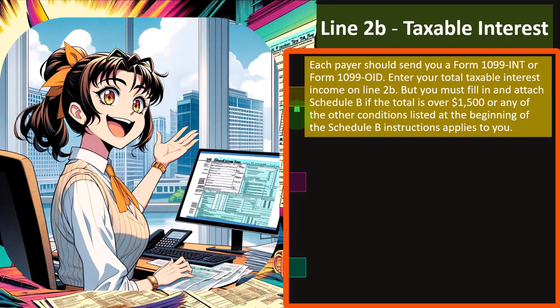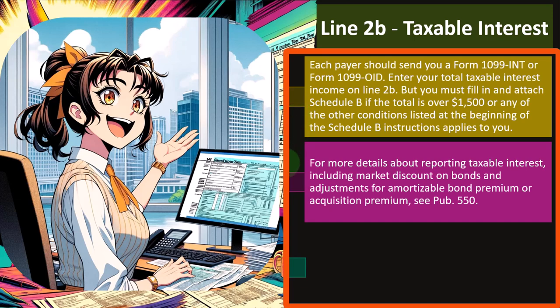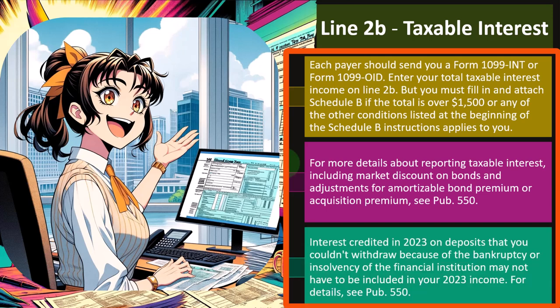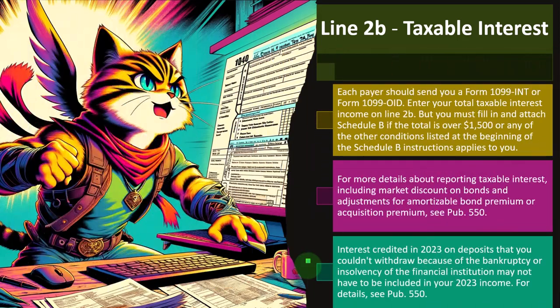If you're getting $1,500 in interest income, you must have a fairly significant amount of investments in financial institutions, which is why they might want more scrutiny on it. Then you would include Schedule B, which gives more information about the financial institutions. For more details about reporting taxable interest, including market discount on bonds and adjustments for amortizable bond premium or acquisition premium, you can see Publication 550 on the IRS website at irs.gov.